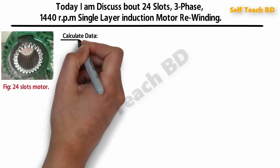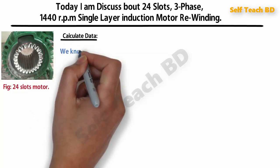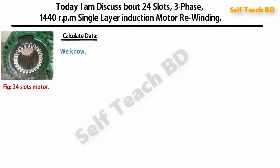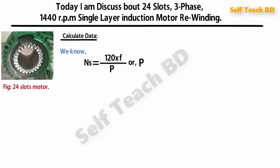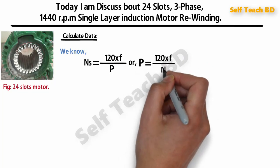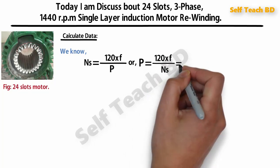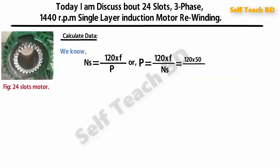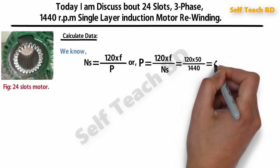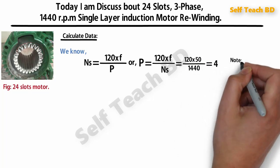First we calculate data. We know Ns is equal to 120f divided by P, so P is equal to 120f divided by Ns.